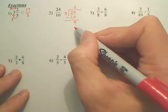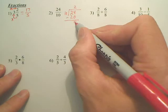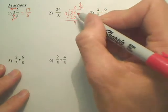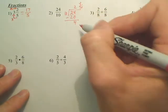24 minus 20 is 4. My answer, I take this 4, I bring it up here. It's my remainder. It's out of 10s. So it's 2 and 4 tenths.